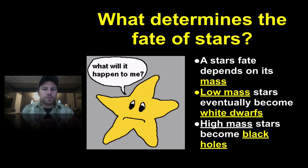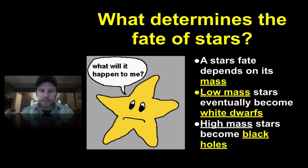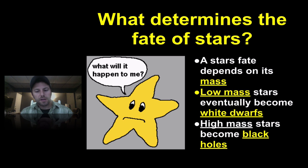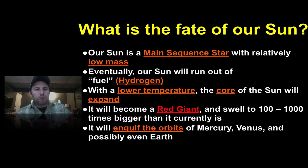What determines the fate of stars is the mass that it has. Low mass stars will eventually become white dwarfs; high mass stars can eventually become black holes. There are lots of things a star can become in between, but we're going to be looking at the lowest mass and the highest mass stars.